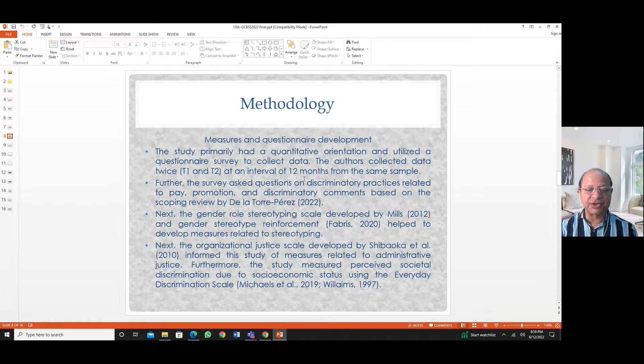The organizational justice scale developed by Shiboka et al. informed the study on administrative injustice or justice. Further, the study measured perceived societal discrimination using the everyday discrimination scale developed by Michaels et al. 2019. So those were the scales that informed the measures of the questionnaire.